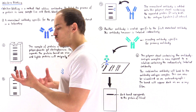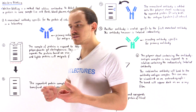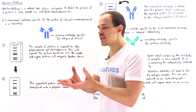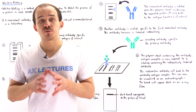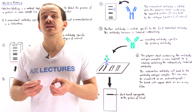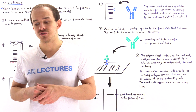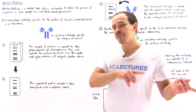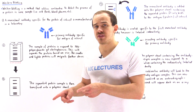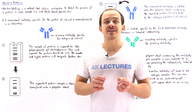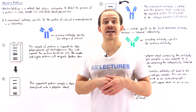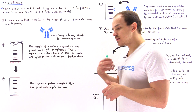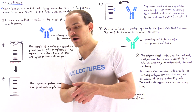We begin by supposing we have a sample of proteins. We have a collection of cells and inside the cells are proteins, including the protein we want to locate. To isolate the proteins from inside the cells, we fractionate our cells and place that fraction into a differential centrifuge machine. As a result of centrifugation, we isolate the proteins found inside our cells.